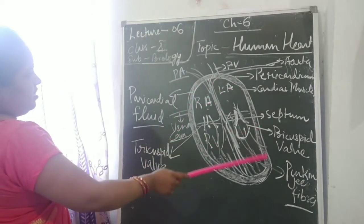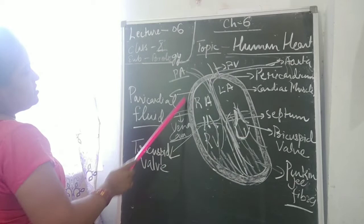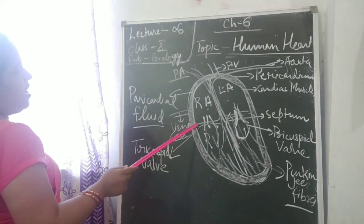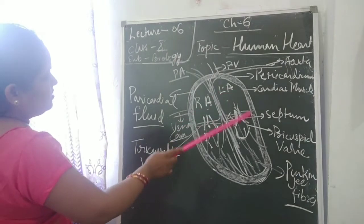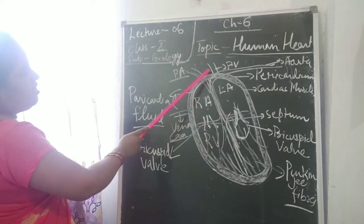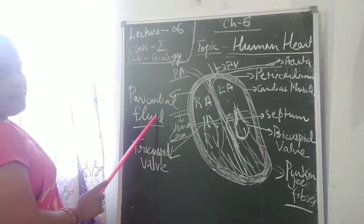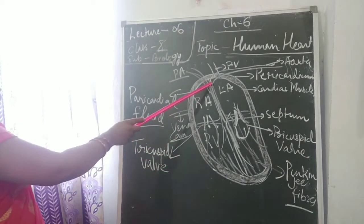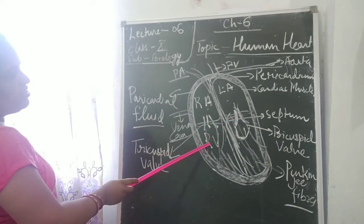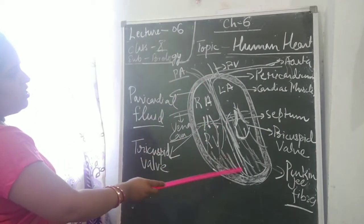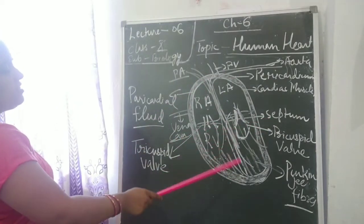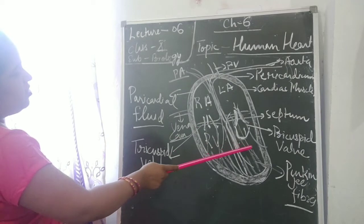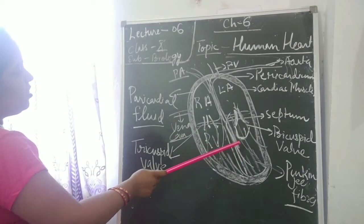The heart structure is made up of two layers. The outer layer is called the pericardium, which is a double membranous structure that protects the heart from external jerks. Inside, the heart is made up of cardiac muscles. The fluid present between the layers is called pericardial fluid, which also helps protect the heart from external shocks. A wall called the septum divides the heart into two equal halves — left and right. When the septum divides the auricles it is called the inter-auricular septum, and when it divides the ventricles it is called the inter-ventricular septum.